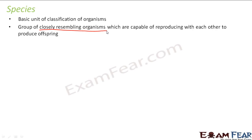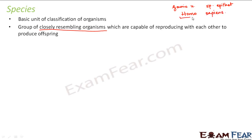Recall binomial nomenclature — it consists of two parts. The first part is the generic name and the second part is the specific epithet. For example, Homo sapiens is the binomial name for human beings. Homo represents the genus, and sapiens represents the species. So Homo sapiens represents the species to which human beings belong.